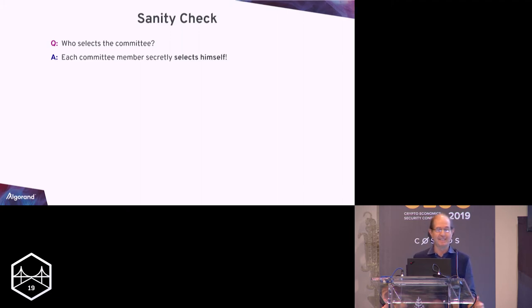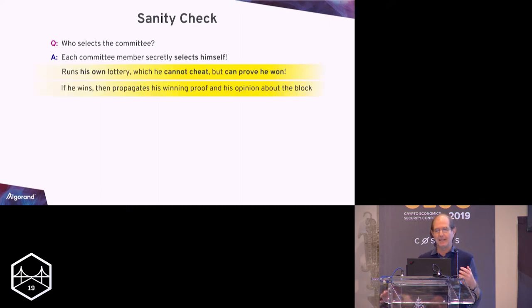Let's do a sanity check. Who selects the committee? Let them be assured it's not me because I might be extremely centralized. The committee members actually secretly select themselves, which sounds a bad idea because if I'm bad I select myself all the time. But in reality, what does this mean? That each one of us, inside the privacy of our own laptops, you run an individual lottery without talking to anybody. Think about pulling the lever of a very easy slot machine, but which implements a cryptographically fair lottery. That not even a nation-state with huge computational resources can enhance the ability to be selected. You pull the lever. If you are somehow selected, you get a winning ticket which is a proof that you are part of this committee, and you propagate this proof together with your opinion about the block. That's roughly how it works.